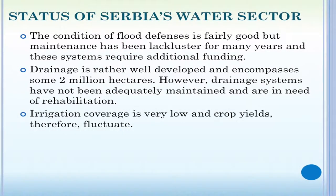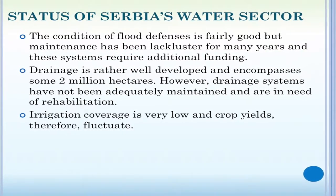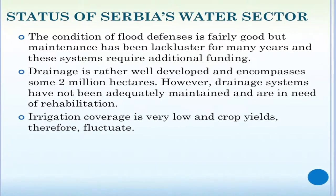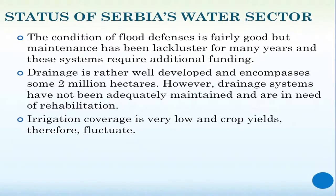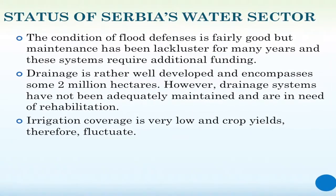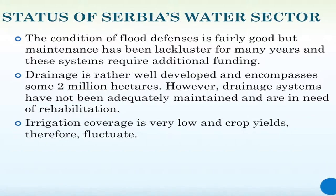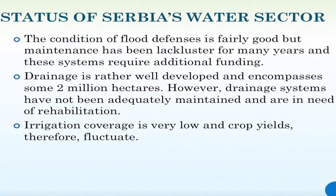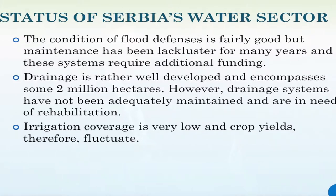Regarding other segments of the water sector: flood defense — although we have had really extensive floods — we have managed to address most problems on bigger rivers, though problems remain on smaller watercourses. Drainage is relatively good and well developed, covering more than two million hectares, but we have problems with maintaining these systems. On the other hand, irrigation is not adequate — we only have about 40,000 hectares covered with irrigation, which is mainly a problem of the economics of agriculture.